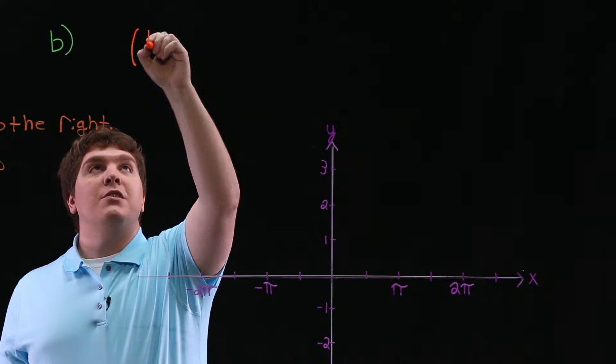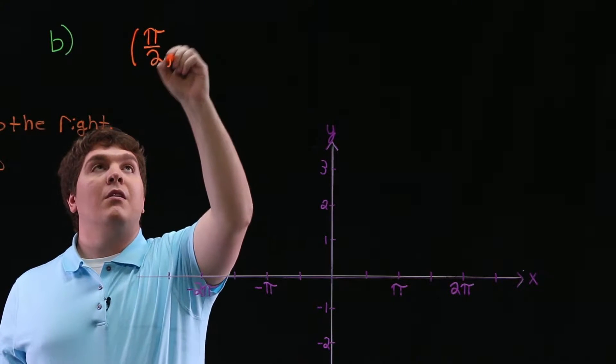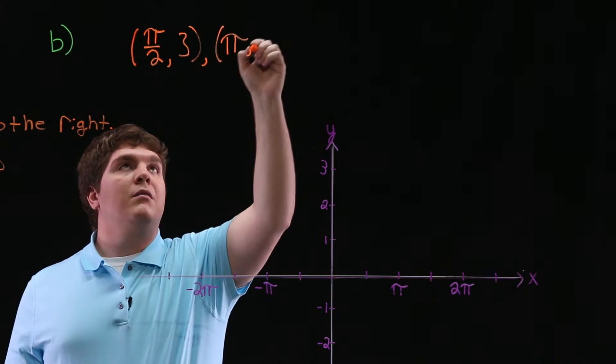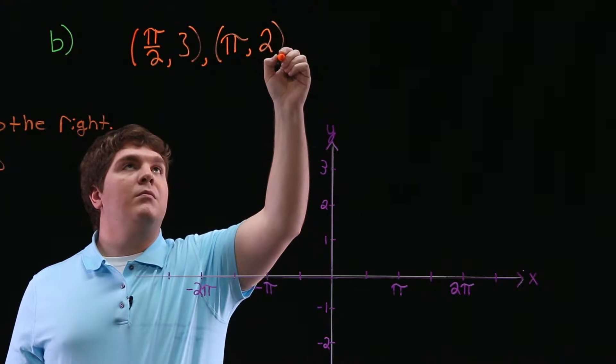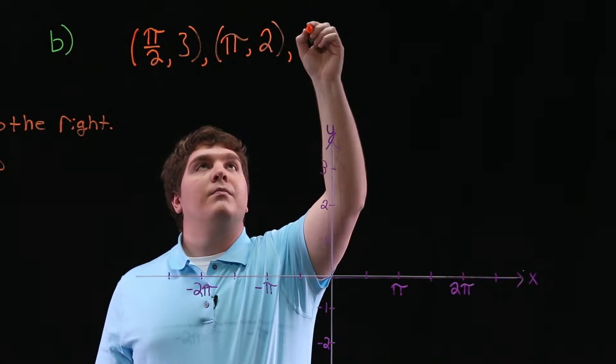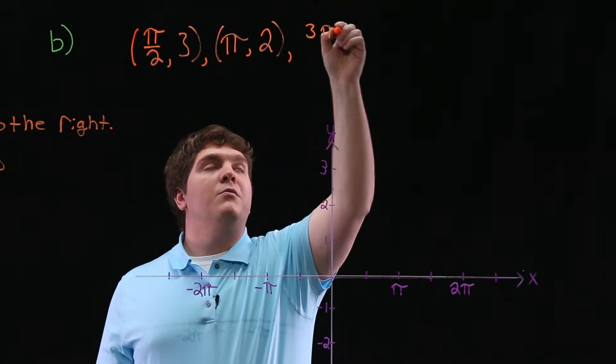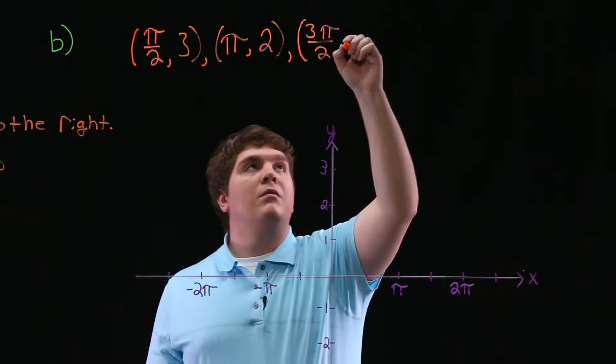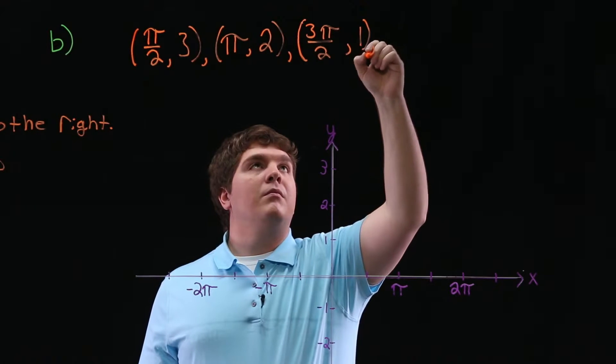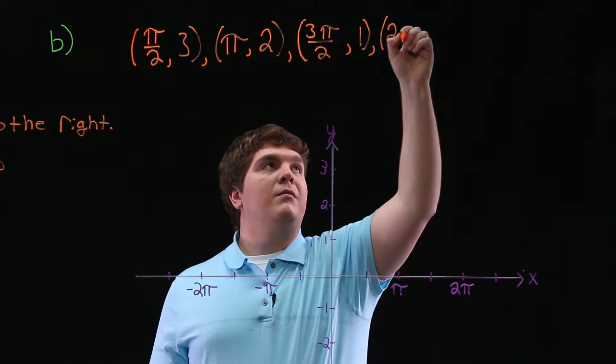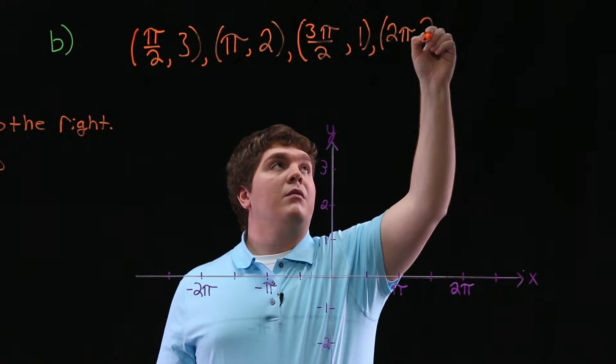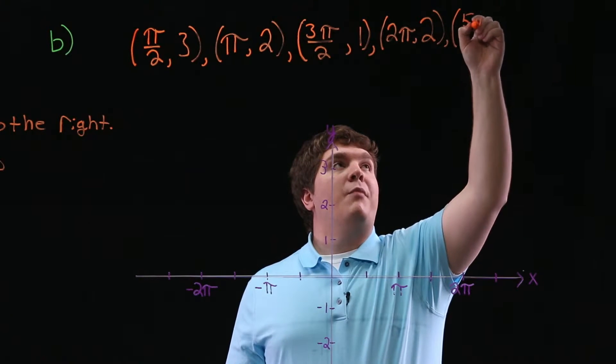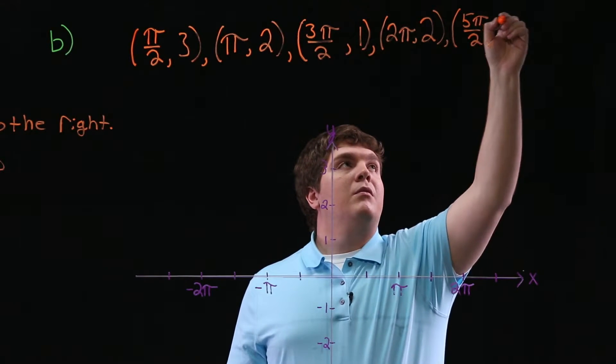These points are pi over 2, 3, pi, 2, 3 pi over 2, 1, 2 pi, 2, and finally, 5 pi over 2, 3.